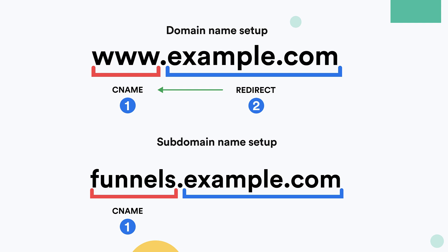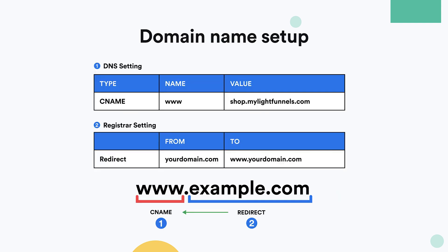Now in order to set up a subdomain, for example funnels.example.com, the setup is even simpler. All you need to do is add a CNAME to your DNS settings with the name of the subdomain that you want to use.